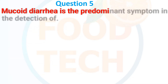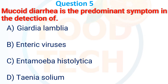Mucoid diarrhea is the predominant symptom in detection of: A, Giardia lamblia; B, enteric virus; C, Entamoeba histolytica; D, Taenia solium. The answer is A, Giardia lamblia.